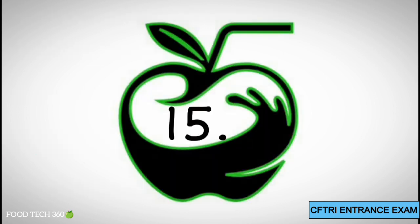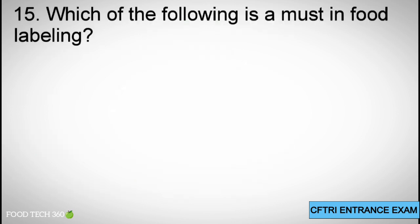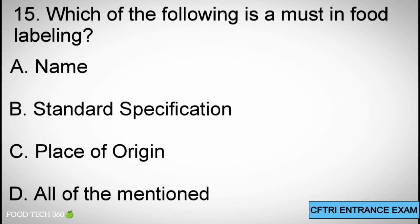Question 15: Which of the following is a must in food labeling? A. Name, B. Standard specification, C. Place of origin, D. All of the mentioned. Correct answer: D. All of the options.